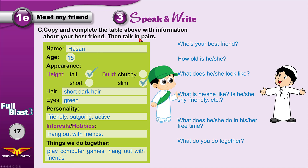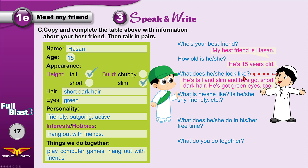Now talk with a partner. Ask: who is your best friend? — Hassan. How old is Hassan? — 15. What does he look like? — you ask this question to ask about appearance. He is tall and slim, with short dark hair and green eyes.